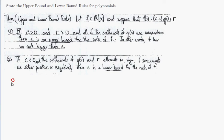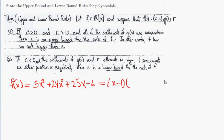Let's take f(x) = 5x³ + 24x² + 25x - 6. Let's perform synthetic division to see what happens when I divide by x - 1. Then I'll have some quotient plus some remainder.